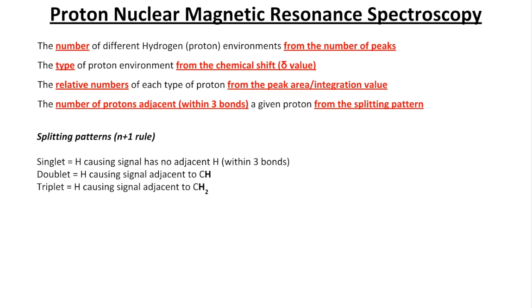A triplet must be an adjacent CH2 group. A quartet, adjacent CH3 group. A quintet, there must be four adjacent hydrogens. A sextet, there would be five adjacent hydrogens, and so on.